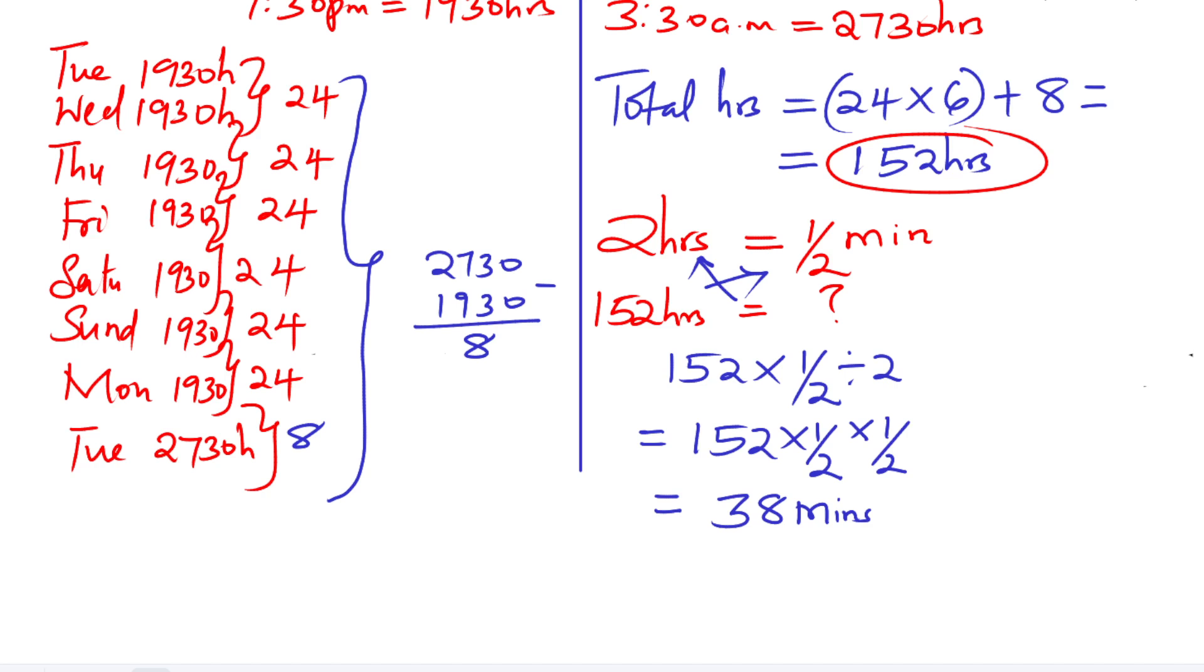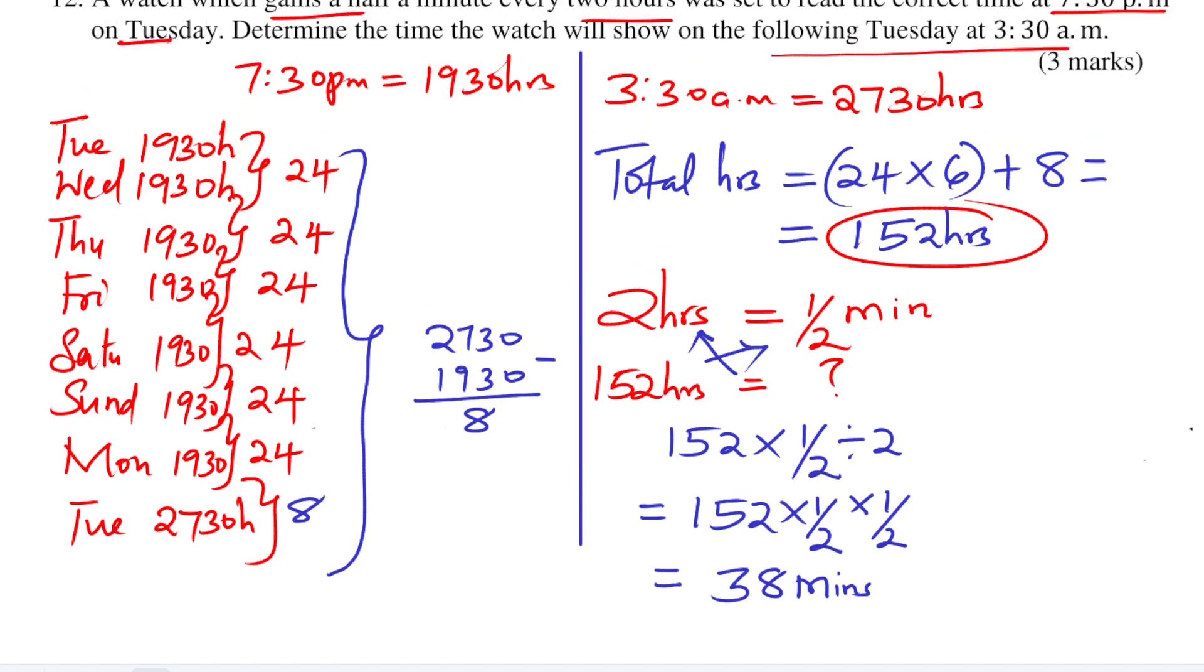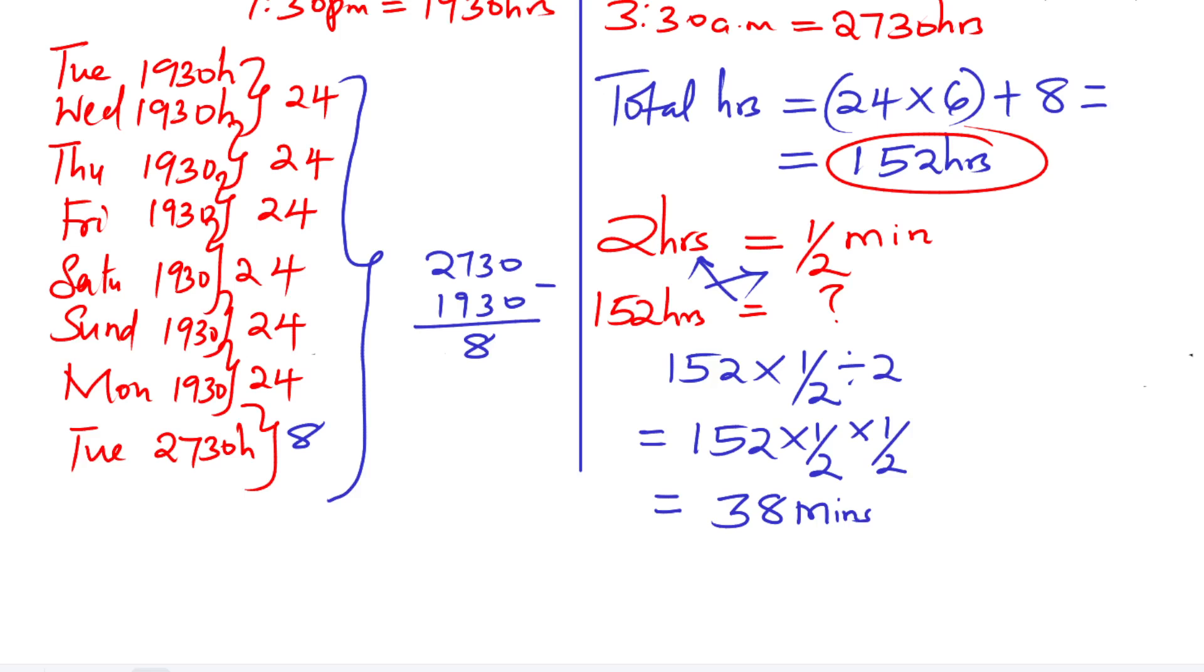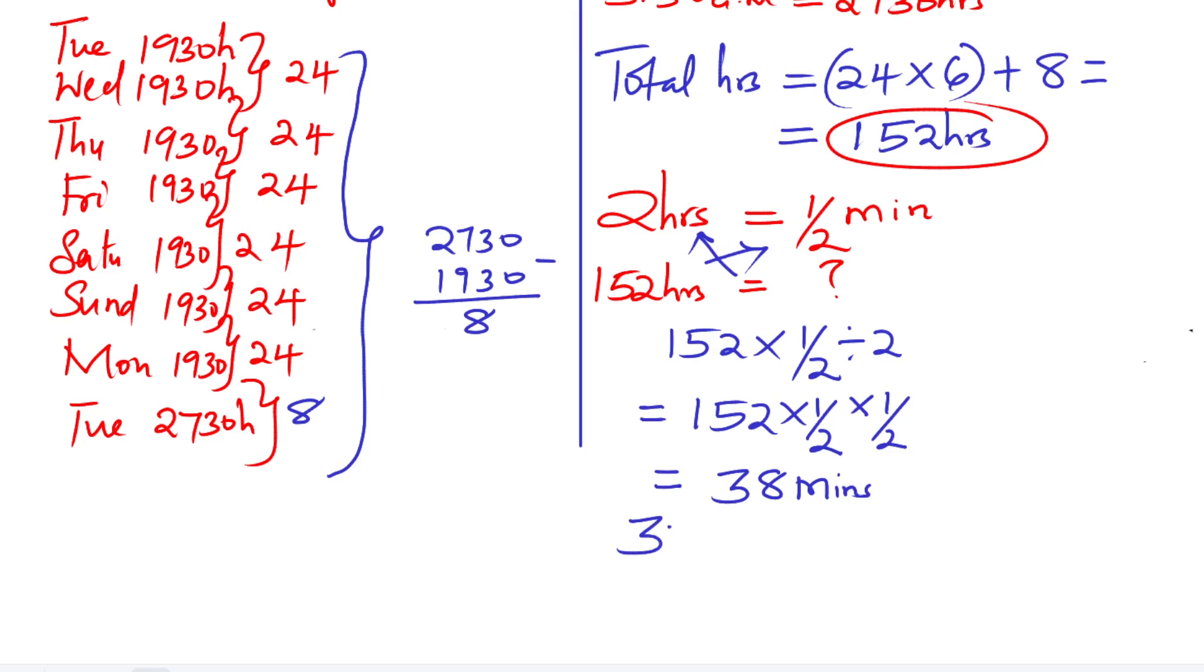Now after getting 38 minutes, that is the total time in minutes gained for those hours. The watch will not show 3:30 AM. There will be a gain of 38 minutes. So you simply add 38 minutes. You get the answer as 4:08 AM. So this is the time.